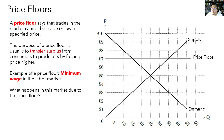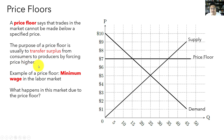Now let's talk about price floors. A price floor says that trades in the market cannot happen below a certain price. An example in real life is minimum wage in the labor market — employers cannot pay workers wages below a specified amount, putting a floor on the price in the labor market. The purpose of a price floor is usually to transfer surplus from consumers to producers by forcing the price higher. For minimum wage, the purpose is to transfer surplus from firms to workers by forcing wages higher.